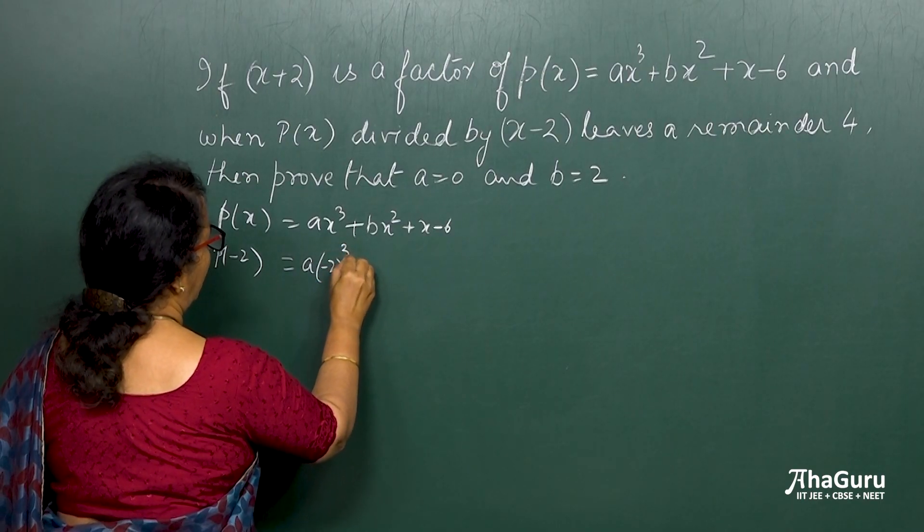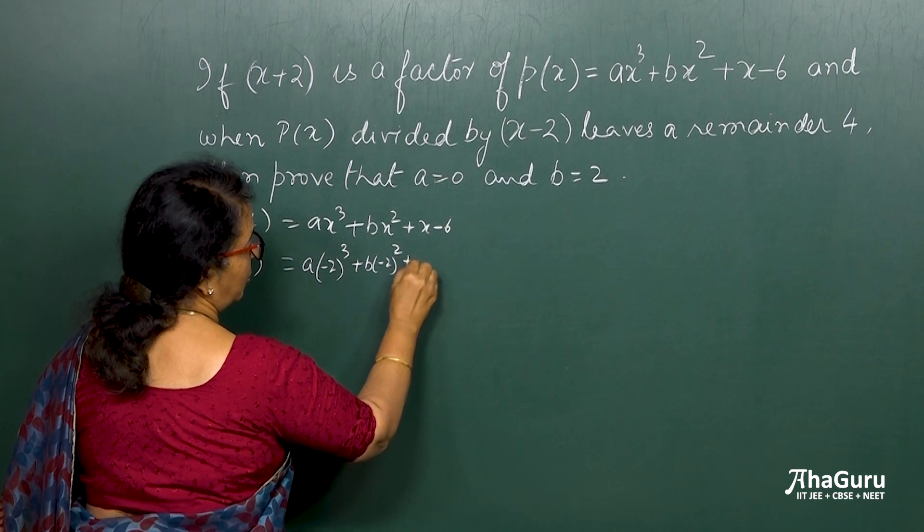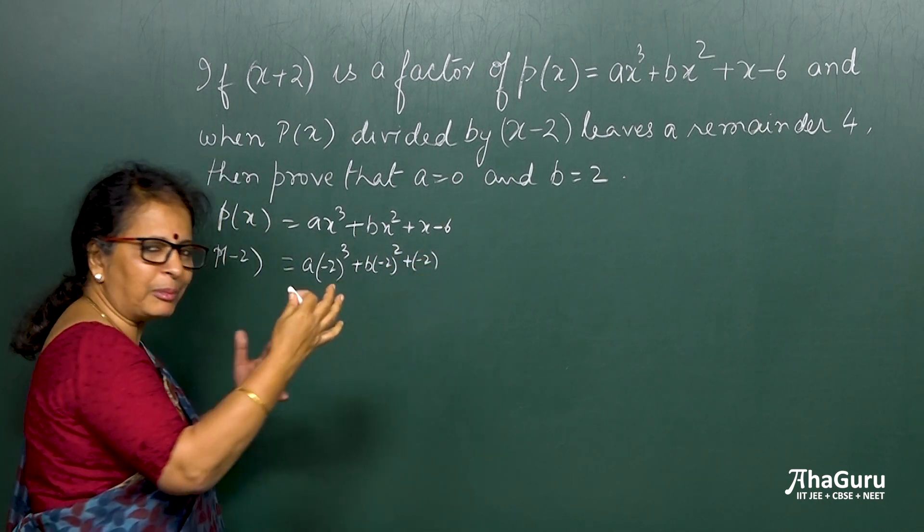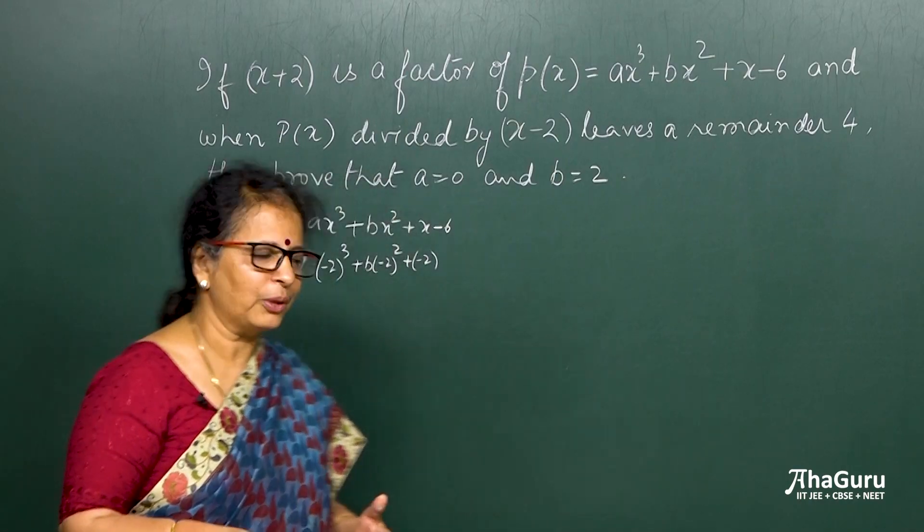Cube plus b minus 2 square plus of minus 2. So just keep that bracket ready so that we don't make confusions with the plus and minus sign.